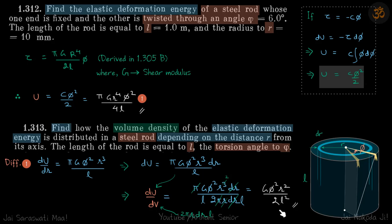In other words, if you take a bigger radius rod it will be more difficult to twist than a smaller radius rod.